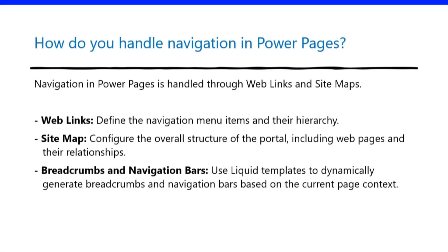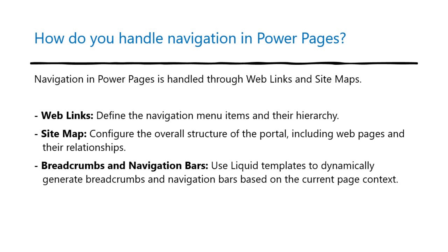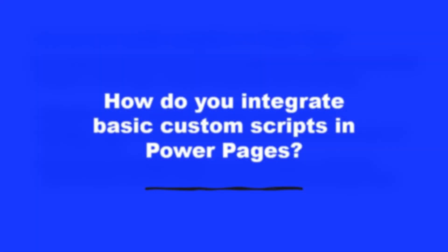How do you handle navigation in Power Pages? Navigation in Power Pages is handled through web links and site maps. Web links define the navigation menu items and their hierarchy. Site map configures the overall structure of the portal, including web pages and their relationships. Breadcrumbs and navigation bars use liquid templates to dynamically generate breadcrumbs and navigation bars based on the current page context.